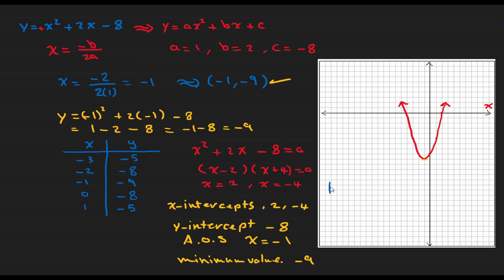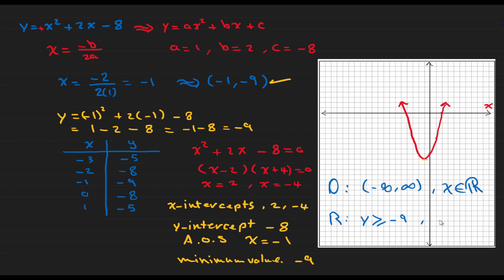Finally, the domain and range. The domain, again and again for any quadratic function, is the interval from negative infinity to positive infinity — the function is defined for all real numbers. For the range: since the function has a minimum value and goes up to infinity, y is all values greater than or equal to -9, or the interval from -9 to positive infinity, including -9.